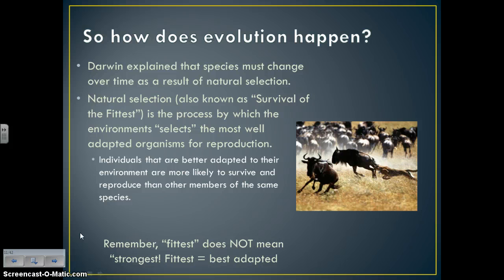Natural selection's nickname, which you've probably heard a million times, is 'survival of the fittest.' Natural selection is the process by which the environment selects the most well-adapted organisms for survival and therefore reproduction. Certain organisms are selected because they're well-adapted, so they survive and reproduce, which means those traits get passed on to future generations.